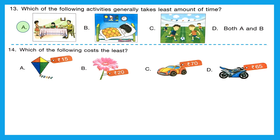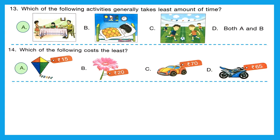Question 14: 'Which of the following costs the least?' Least means minimum — we need the smallest number. A is a kite costing 15 rupees, B is a flower costing 20 rupees, C is a car toy costing 70 rupees, and D is a bite toy costing 65 rupees. Out of 15, 20, 70, and 65, the smallest is 15. The right answer is option A.